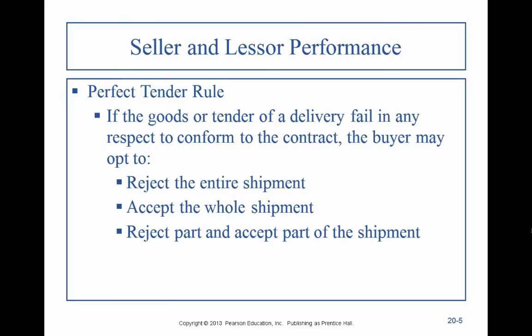The perfect tender rule under the UCC — unless the parties change it — is the default rule and basically says: if the goods or tender of delivery fail in any respect to conform to the contract, in any respect, the buyer has the opportunity to reject the entire shipment. For example, I wanted 100 dresses in red, you gave me only 99 — you've failed the perfect tender rule.